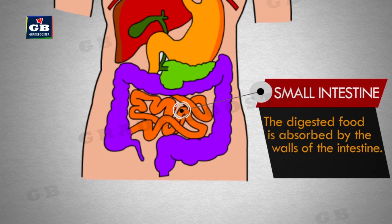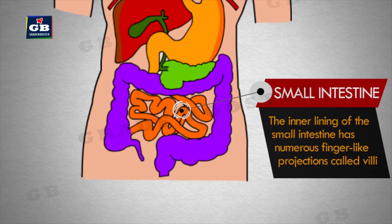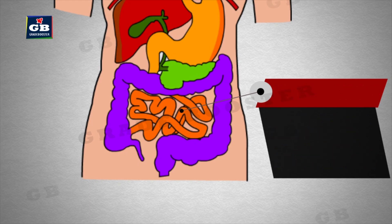The digested food is absorbed by the walls of the intestine. The inner lining of the small intestine has numerous finger-like projections called villi, which increase the surface area for absorption. The villi are richly supplied with blood vessels which take the absorbed food to each and every cell of the body.